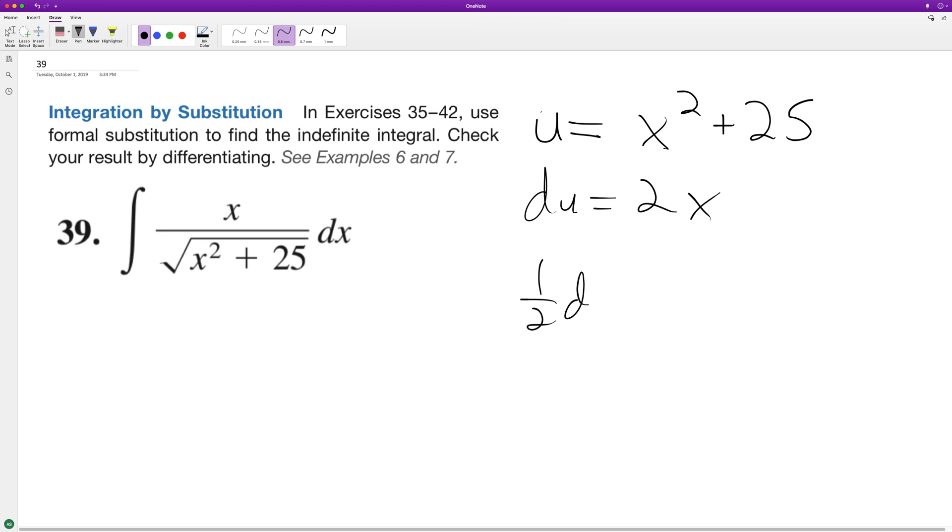So we'll have one half integrate u raised to the negative one half. That's one over the square root of that quantity du. So integrating this, we have one half of u raised to the negative one half plus 1 over negative one half plus 1, plus C.